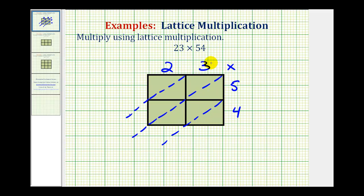Now to multiply, we're going to multiply these single digits along the top by the single digits along the side. For example, for this cell here, we'll find the product of three and four. Three times four is twelve, so we'll put a one here and a two here. For each product, we'll have two digits, and if it's less than ten, we'll put a zero in the upper triangle.